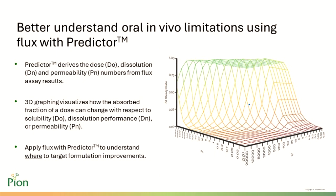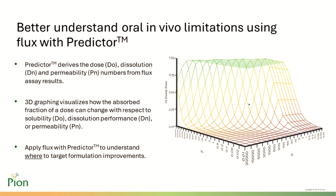The Predictor fraction absorbed module derives the dose, dissolution, and permeability numbers from flux assay results and calculates a 3D visual representation of how the absorbed fraction of a dose can change with respect to the solubility, dissolution performance, or permeability of the drug. Through this, Predictor provides critical input to formulators, aiding understanding of where to target formulation improvements to boost in vivo absorption.